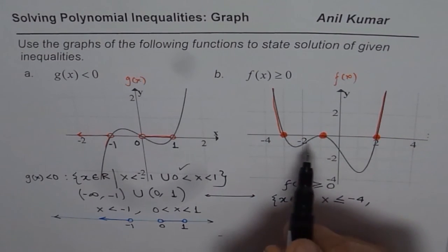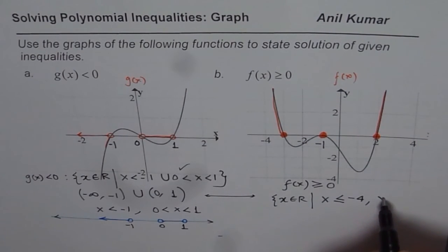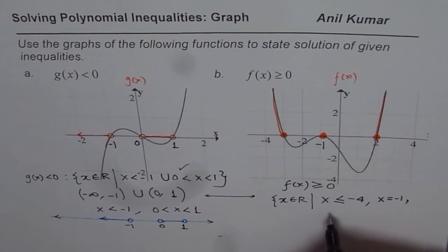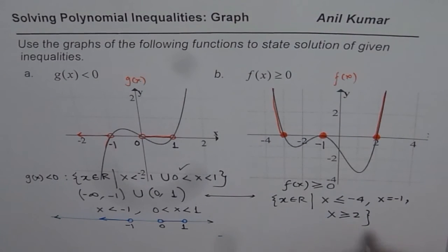x is less than minus 4, and is also equal to minus 1. We say x is equal to minus 1, and x is greater than equal to 2. So that forms the part of our solution.